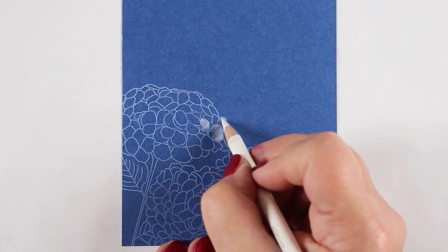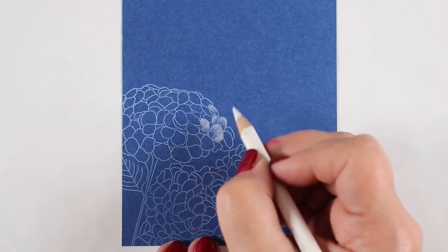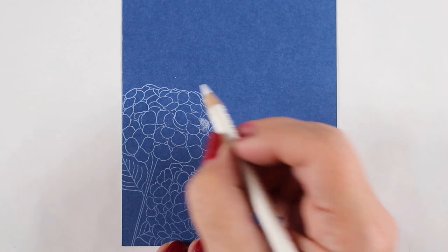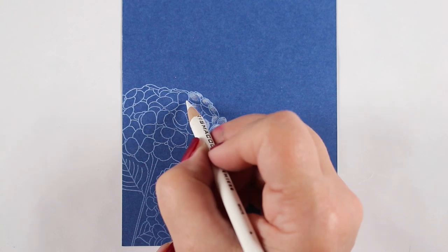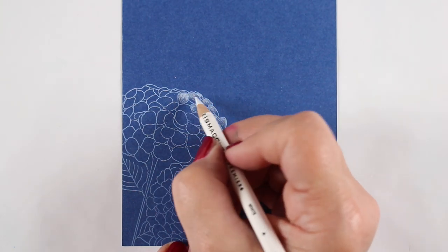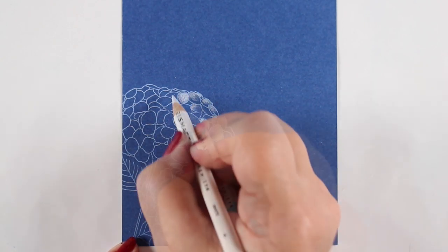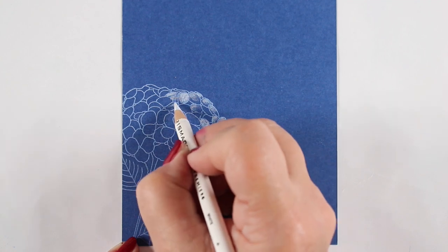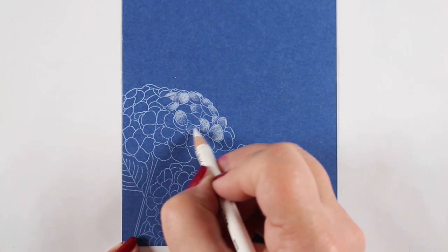I'm coloring the highlights on the top side of the flower. You can decide which way you want your sun to be shining on, and whatever petals the sun would touch, that's where you put the white pencil. I'm going to go around creating a C-shape on the top side of each one of the flowers.